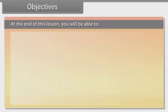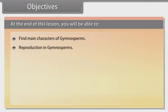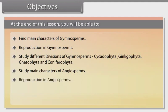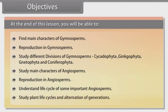At the end of this lesson you will be able to find main characters of Gymnosperms, reproduction in Gymnosperms, study different divisions of Gymnosperms including Cycadophyta, Ginkgophyta, Gnetophyta and Coniferophyta, study main characters of Angiosperms, reproduction in Angiosperms, understand life cycle of some important Angiosperms, study plant life cycles and alternation of generations.